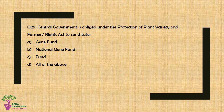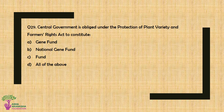Question No. 29: The Central Government is obliged under the Protection of Plant Variety and Farmers' Rights Act to constitute — Option A: Gene Fund, Option B: National Gene Fund, Option C: Fund, or Option D: All of the above. The correct answer is Option B — National Gene Fund.